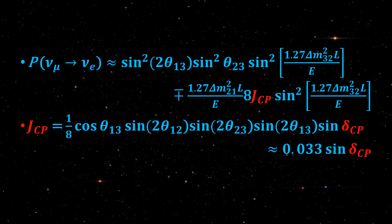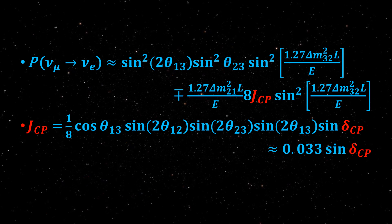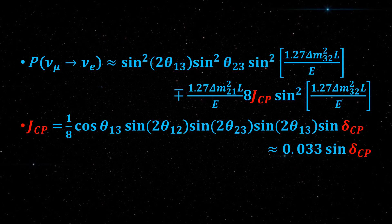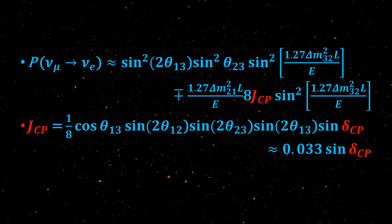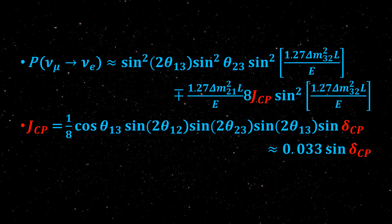The CP symmetry violating effect in neutrino and antineutrino oscillations has a magnitude that depends on the Jarlskog invariant. According to current measurements, this is approximately 0.033 times sine δ_CP.